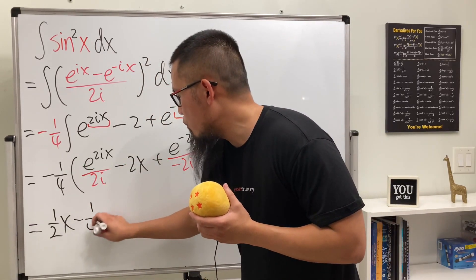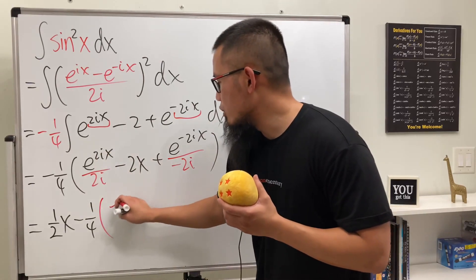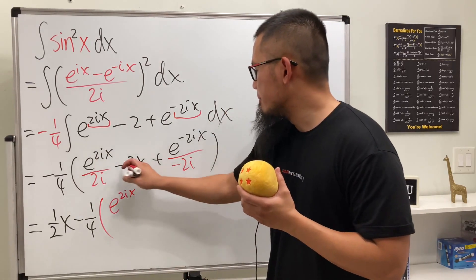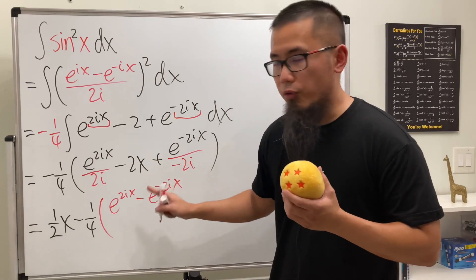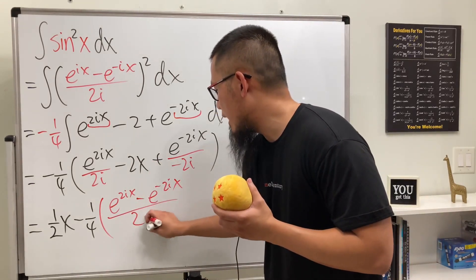I'm going to write it as negative 1 over 4, and as you can see, this right here is going to be e to the 2ix and then minus e to the negative 2ix and then over the same denominator, which is 2i.